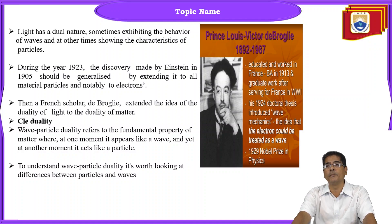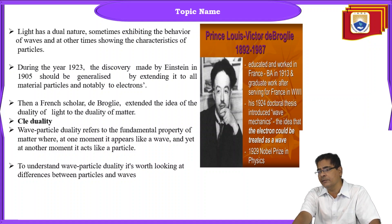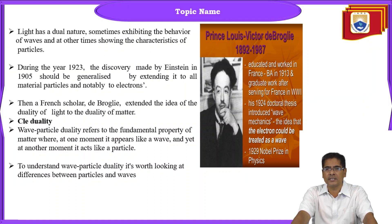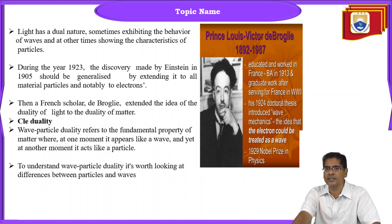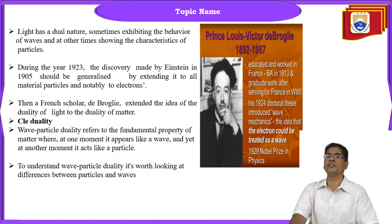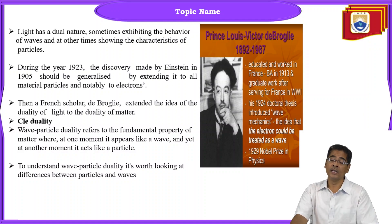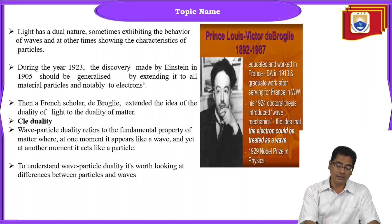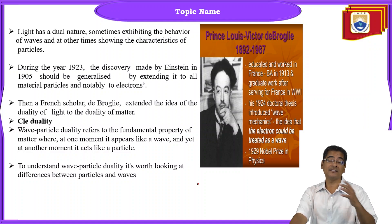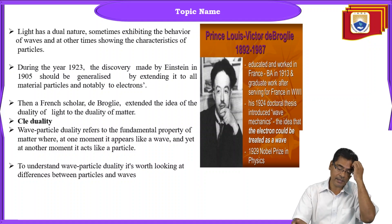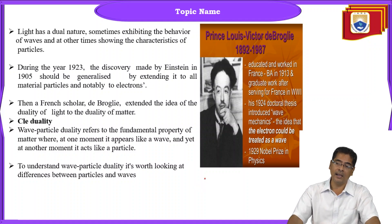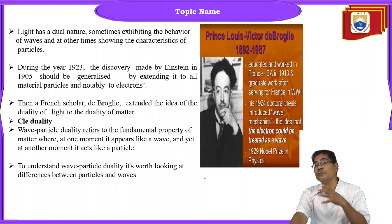Another scientist, Prince Louis Victor de Broglie, started giving the concept of dual nature — light has a dual nature. Sometimes it exhibits the behavior of waves, and sometimes it behaves with the characteristics of particles. In the form of radiation, light has some dual nature, which we call wave-particle duality.